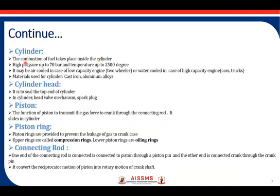Cylinder: The combustion of fuel takes place inside the Cylinder. The pressure up to 70 bar and temperature up to 2500 degrees will be generated when the air-fuel mixture is burned inside the cylinder. The cylinder may be air-cooled or water-cooled. Low-capacity engines are cooled by air, whereas for high-capacity engines, a water jacket is there for cooling purpose. The material used for the cylinder is cast iron or aluminum alloys.